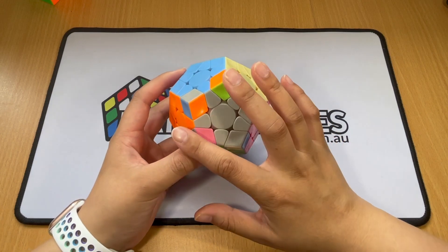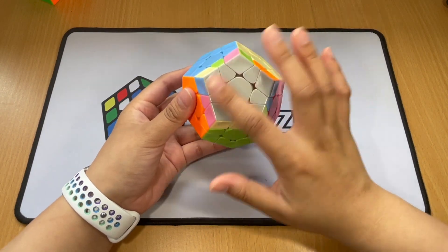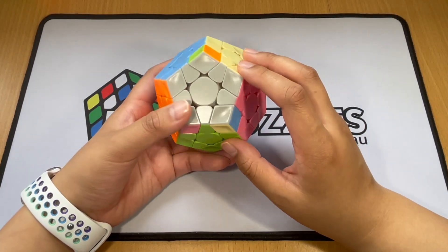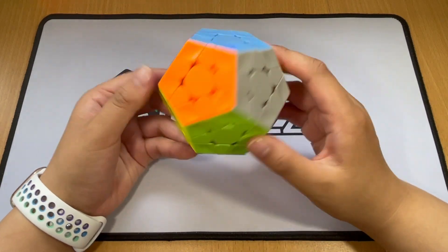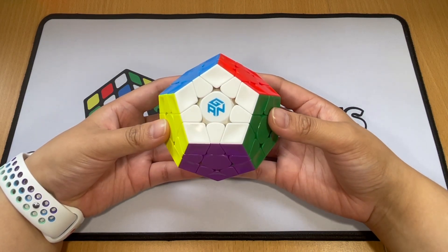From here, we want to make this whole bottom gray. Sexy move, and you can see we have a gray bottom. Realign it so your centers match. Now we're going to make sure each of these corners matches, and you've solved your Megaminx. This looks complicated, but if you know how to solve a 3x3, you can solve this too.